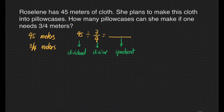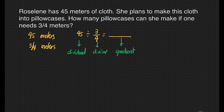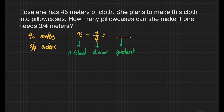In dividing fractions, we follow steps in order for us to arrive at the correct answer. The first step is to copy our dividend. But since our dividend is a whole number, we can change it into a fraction by writing 1 as its denominator. So that's going to be 45 over 1.